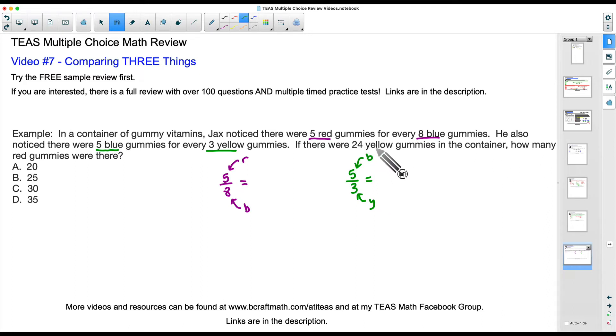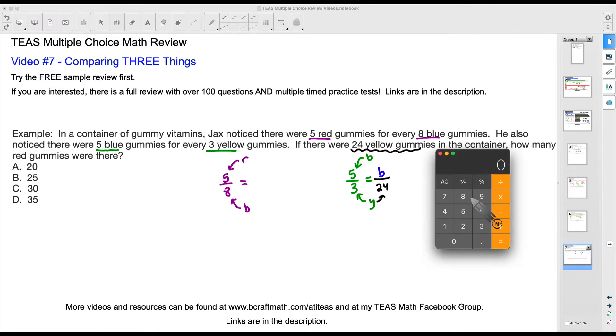This 5 represents blue. This 3 represents yellow. Now what we're going to do is we're going to use these proportions together to get our final answer. We know there's 24 yellow gummies in the container and our goal is to figure out how many reds there are. I can take this 24 yellow gummies. The only spot we can use that 24 is going to be at the bottom of this fraction over here. So notice I have yellow and yellow, and this will allow us to solve for the blue.